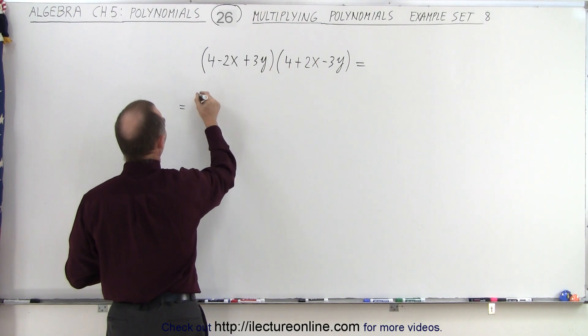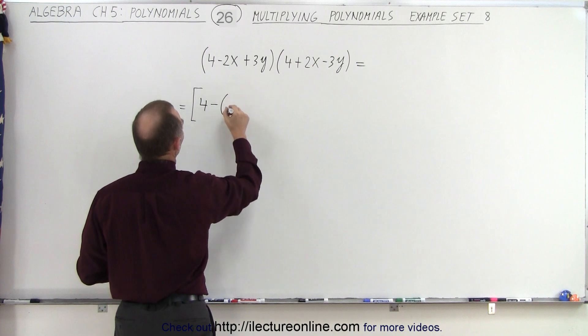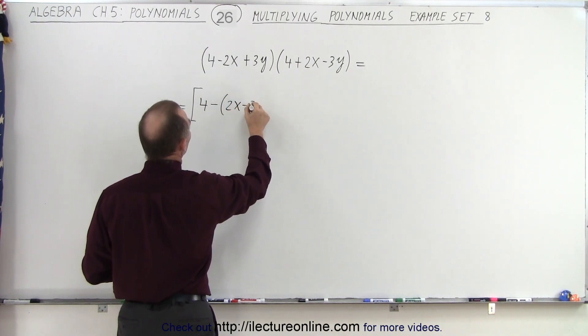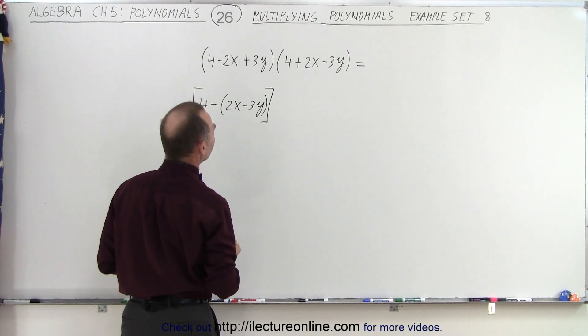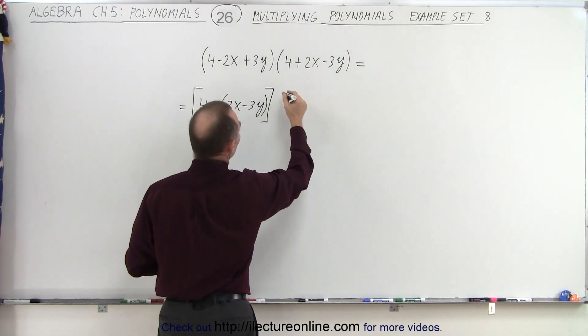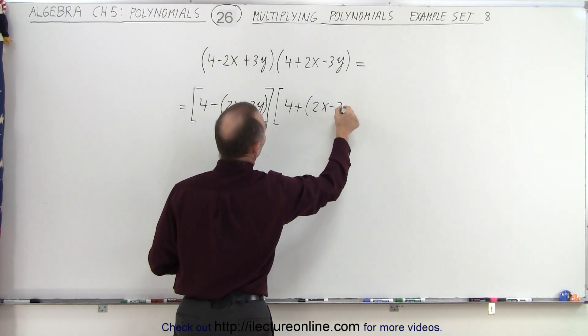This could be written as, using brackets here, it would be 4 minus (2x - 3y), like this. And then, if we do the same over here but factor out a positive sign, we can multiply this times 4 plus (2x - 3y).